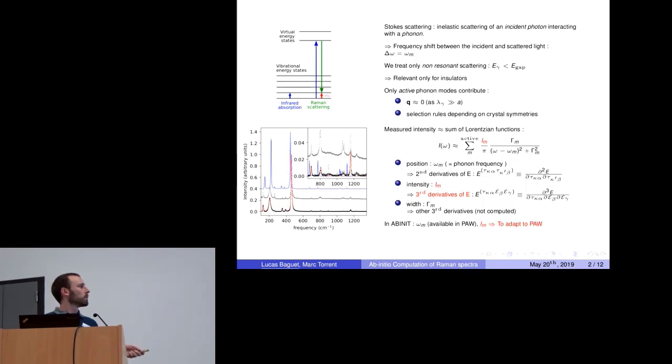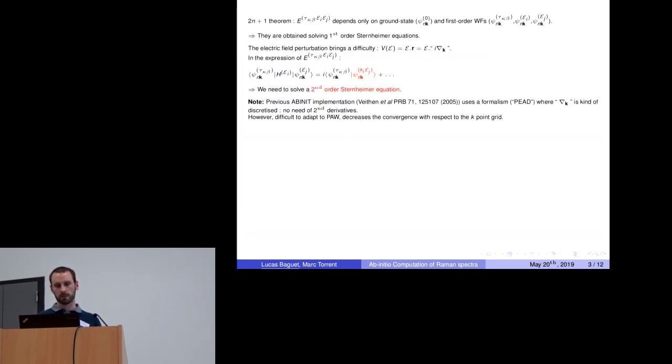The goal of my work was to adapt an already existing implementation of the intensities for pseudopotentials to PAW potentials. But before doing that, preliminary work was needed. From the 2n+1 theorem, we know that the third derivative of the energy depends only on the ground state wave functions and the first derivative wave functions. They are obtained solving the first order Sternheimer equations. However, when we deal with electric field perturbations, we have to deal with the position operator, which in k-space is a gradient operator.